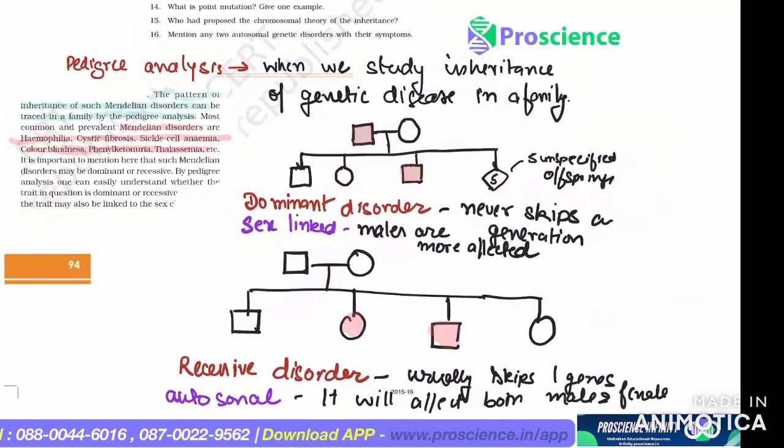So by pedigree analysis we can answer some questions like: Is the disorder dominant, recessive, sex-linked, or autosomal? Is this clear?